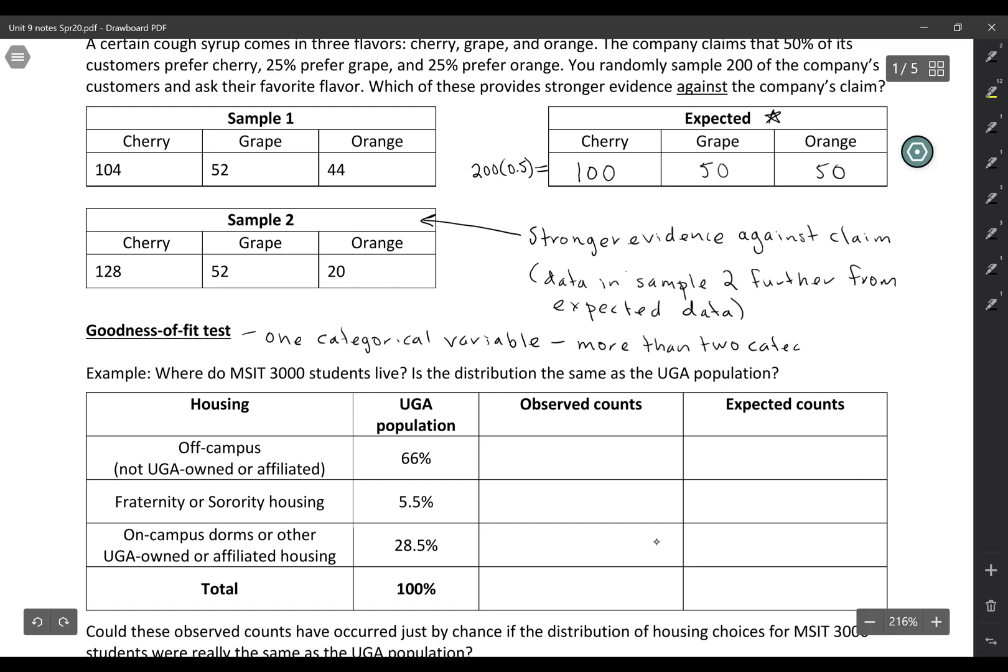So we can't think of it as just success and failure. We have cherry, grape, and orange. We have three different categories that we have to consider.